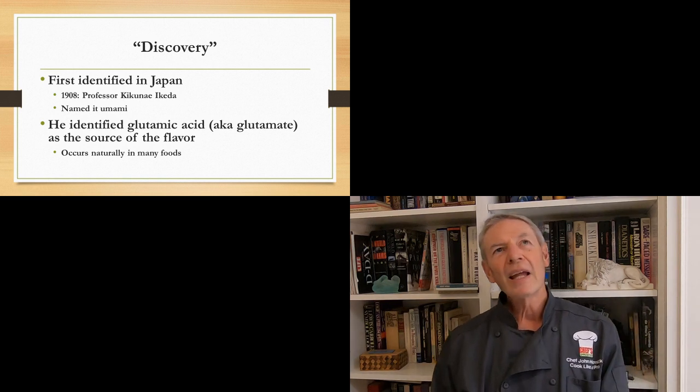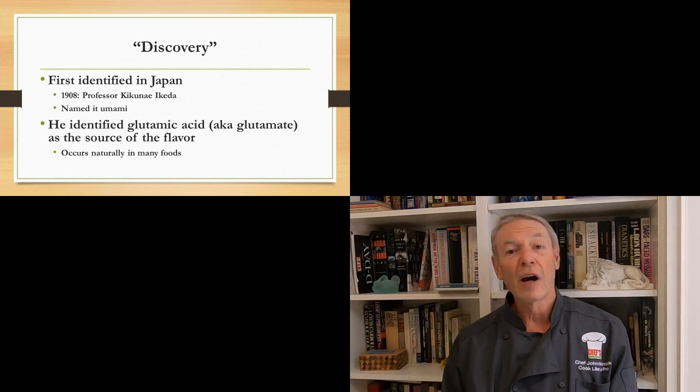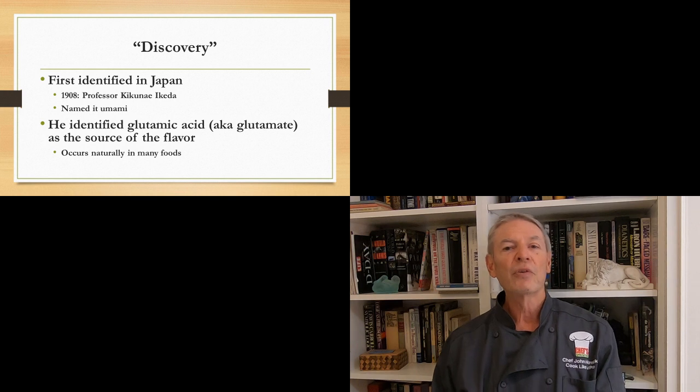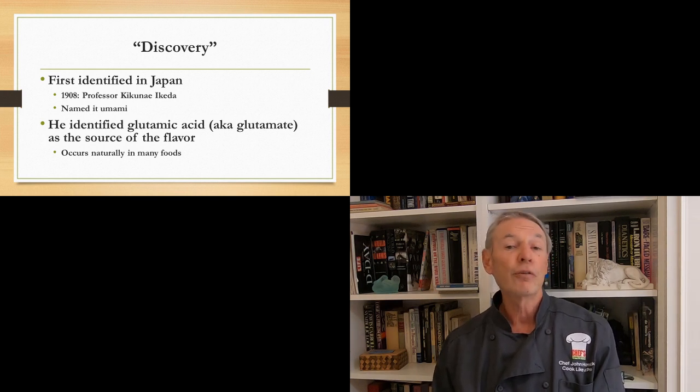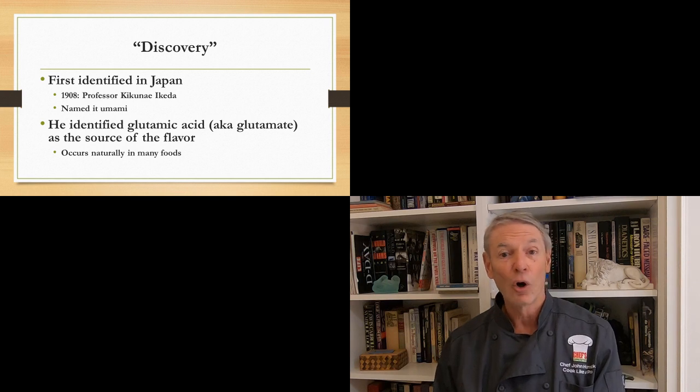Now, you can't say that Umami was exactly discovered because it was always there, right? But it was identified in Japan by a professor, Kakune Ikeda in 1908. And he named it Umami.